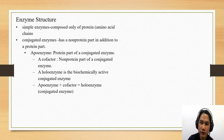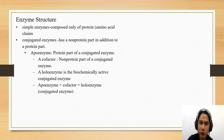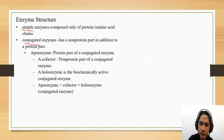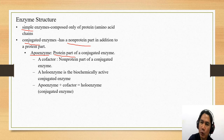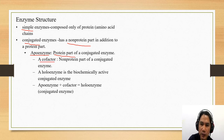There are two types of enzymes based on structure. One is simple, and the other one is conjugated. When we say simple enzyme, they are composed of amino acids only — composed of protein only. Conjugated enzyme has a non-protein part. The protein part of the conjugated enzyme is called an apoenzyme. The non-protein part is called a cofactor — the non-protein part of the conjugated enzyme.